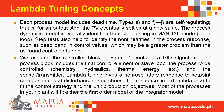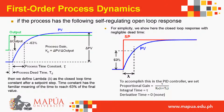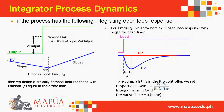The controller block contains a PID algorithm; the process block includes the final control element or slave loop, the process to be controlled, and the sensor or transmitter. Lambda tuning gives a non-oscillatory response to setpoint changes and load disturbances. You choose the response time lambda to fit the control strategy and unit production objectives. Most processes fit either the first-order model or the integrator model.